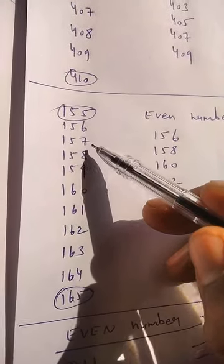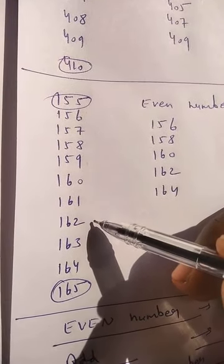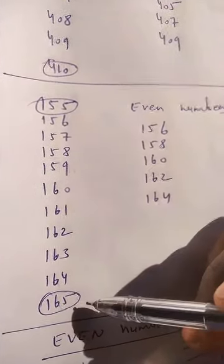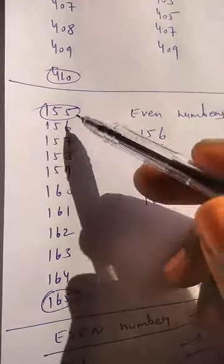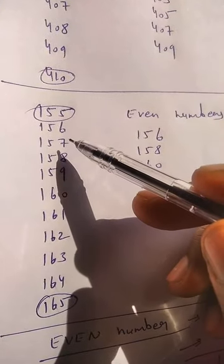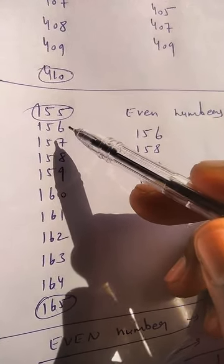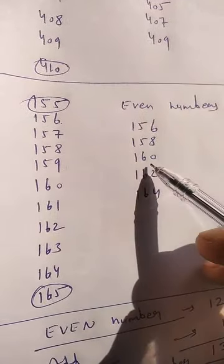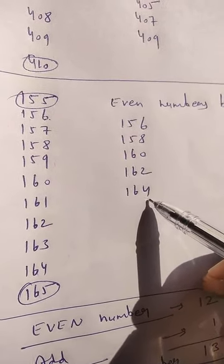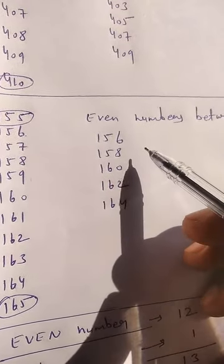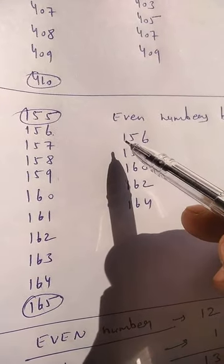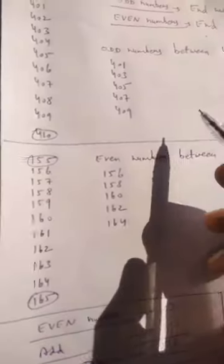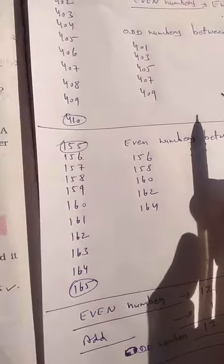155 से 165 तक की पूरी counting: 155, 156, 157, 158, 159, 160, 161, 162, 163, 164. 155 और 165 between में चाहिए, इसलिए इन्हें count से बाहर किया। अब जिनका end 2, 4, 6, 8, या 0 से हो: 156, 158, 160, 162, और 164 — these are the even numbers between 155 and 165. इस प्रकार आप odd और even numbers की आसानी से पहचान कर सकते हैं।